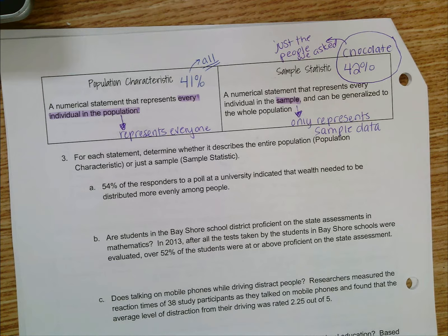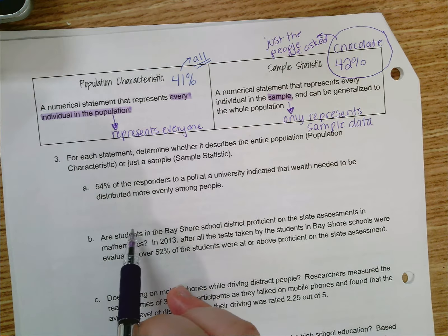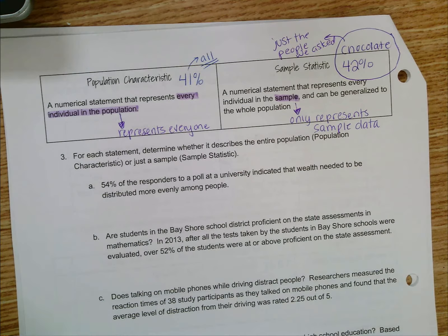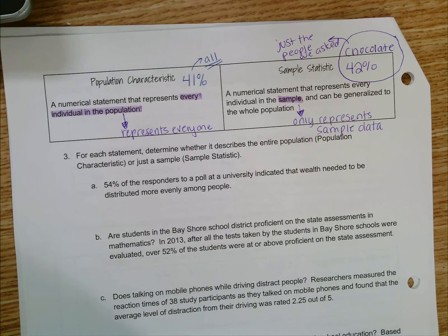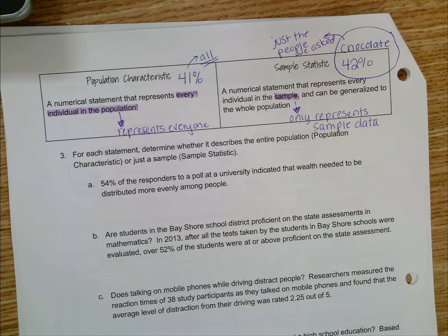Using this information with your partner, please go on and answer the questions that follow. We'll try A together just so you have an idea of what you're doing. For each statement, determine whether it describes the entire population, meaning it's a population characteristic, or just a sample.